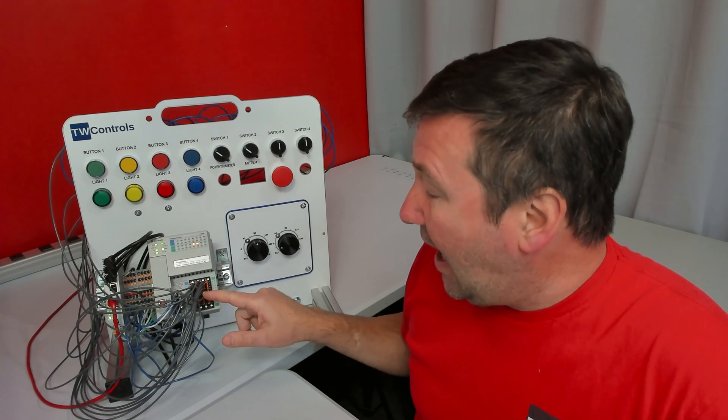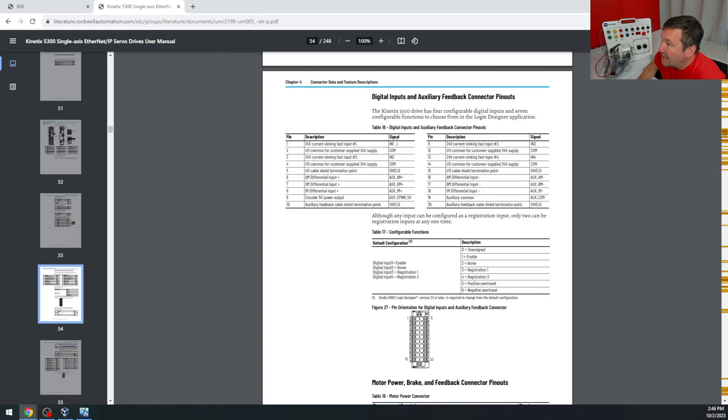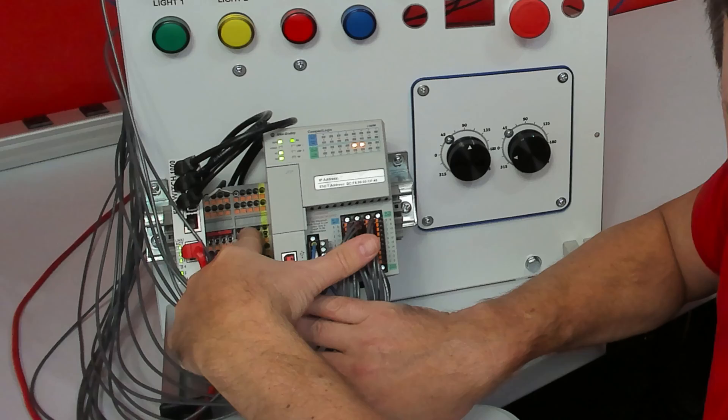So we're simply going to take output number four and connect it to pin number one of our Kinetics left-hand drive. Then we're going to leave that connection from our previous video. If you didn't connect it, we're going to connect pin two to the zero volt of our trainer, which is the left set of terminal blocks.